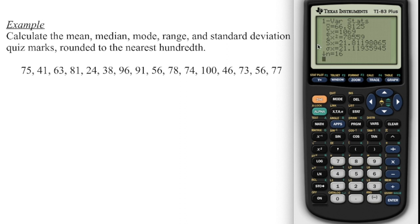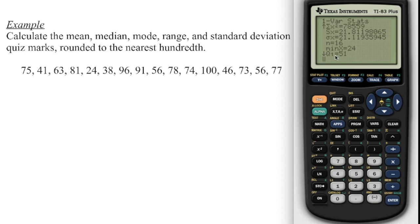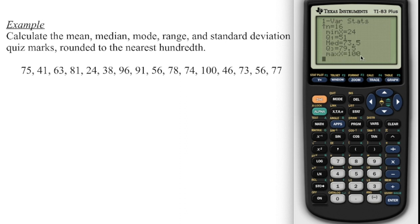This is the same for both calculators. Check the number of data values — that n tells you we've entered 16 pieces of data. We can see X-bar, which is our mean. Scrolling down, this is our minimum value — don't worry about the quartiles this year. This is our median: 73.5. Maximum value is 100, so maximum minus minimum gives us the range. Mode is the one value not shown here, but we've got the mean, median, data to calculate the range, and the standard deviation. Round all of those to two decimal places.